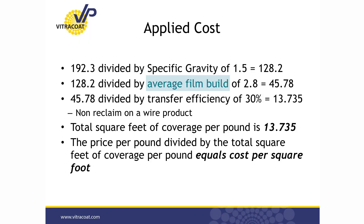You're going to need to know the average film build that you're going to apply that coating at. You're going to need to know the transfer efficiency or product utilization of that product. And you're going to need to know the cost per pound. So let's walk through each one of those variables.